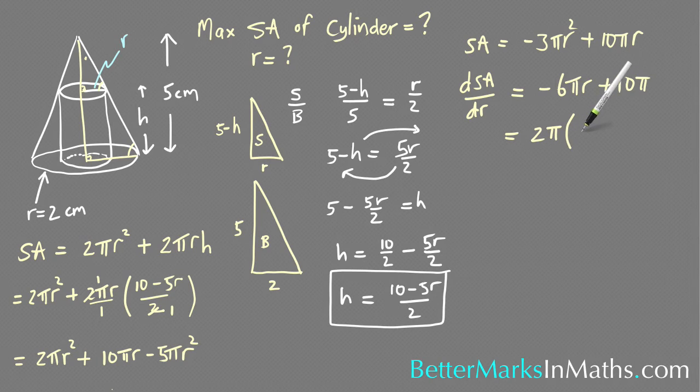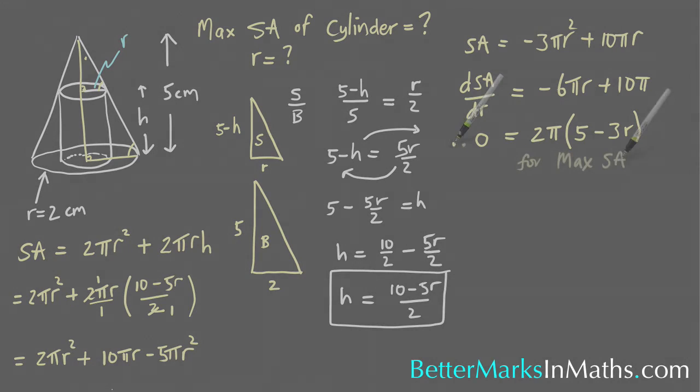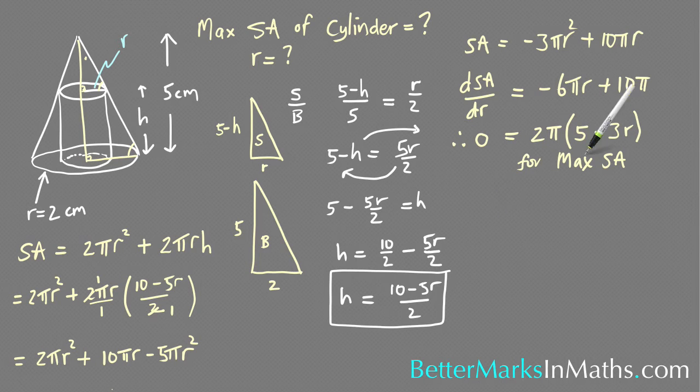And taking out a common factor 2π, and I'm going to take it out from this term first and then minus, so that's going to be 3r here. And then letting that equal 0 for that maximum surface area.